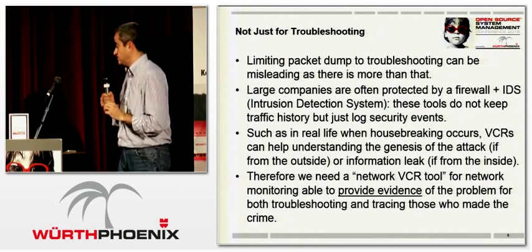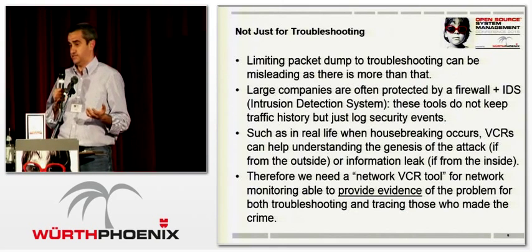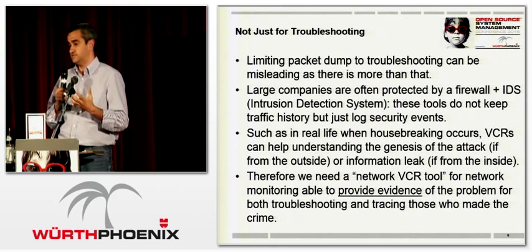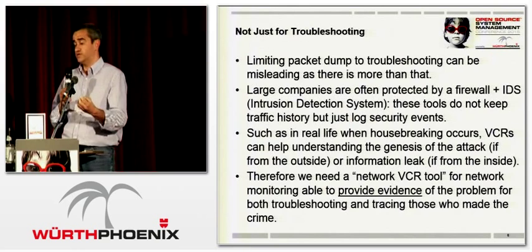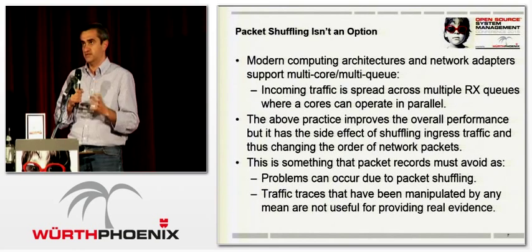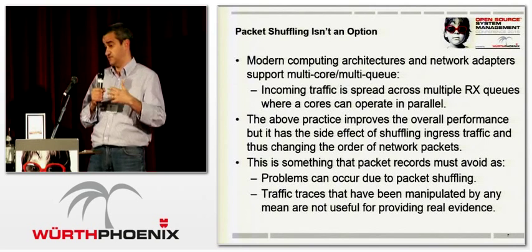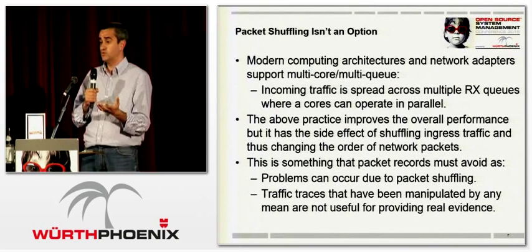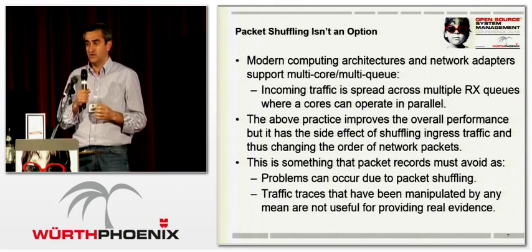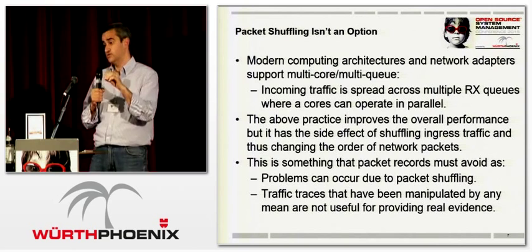There is another problem: many organizations have deployed firewalls, and others have also added an IDS — an intrusion detection system. But the IDS only reports a warning, an error, or an information alert; it does not give you evidence of the problem. So if you have information leakage — someone sending out data that should not have left — you want to see what information was sent out. You really have to pinpoint the problem and go back to the packets.